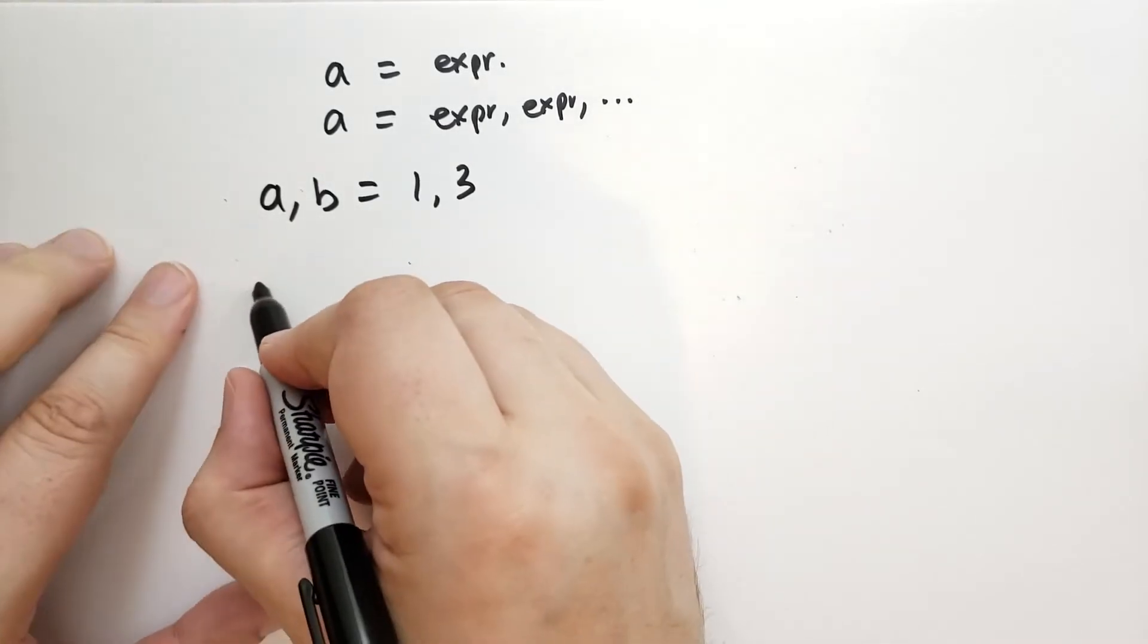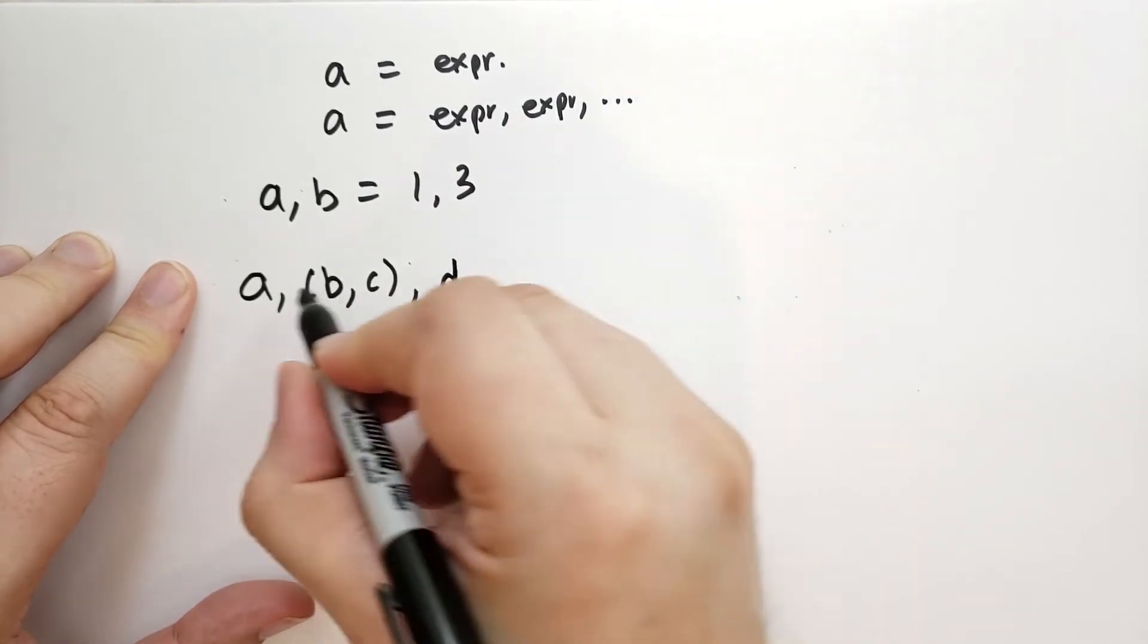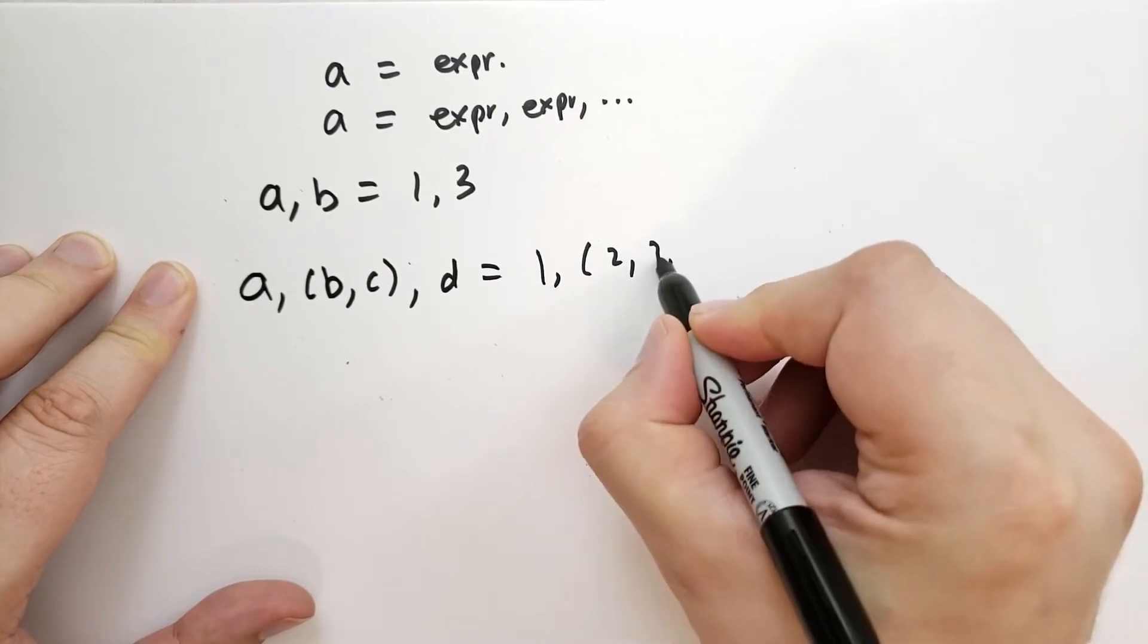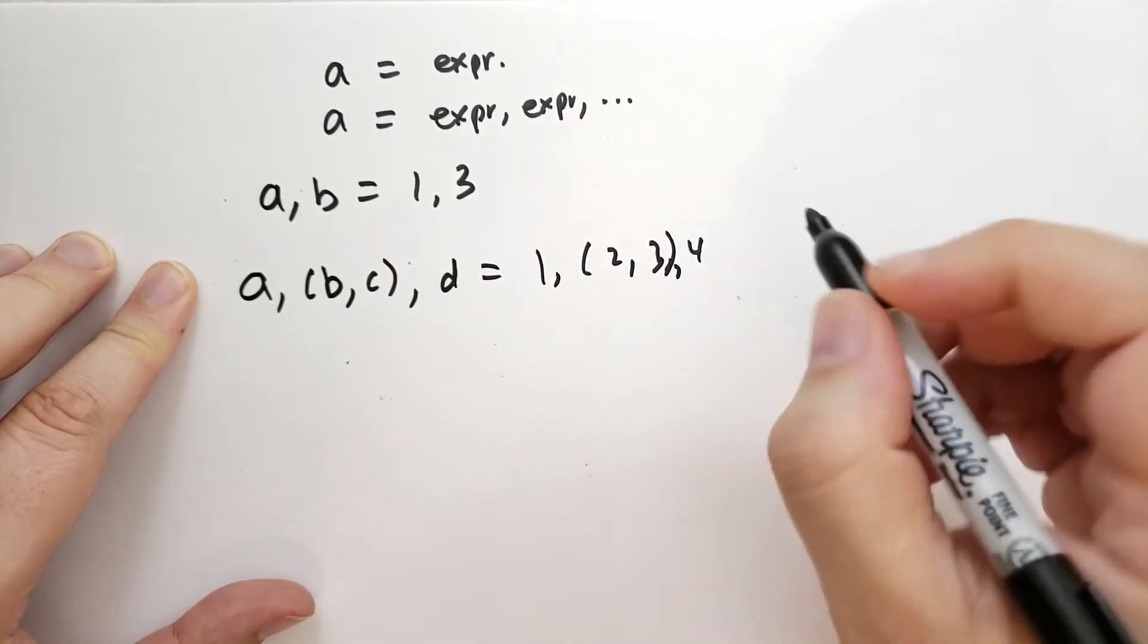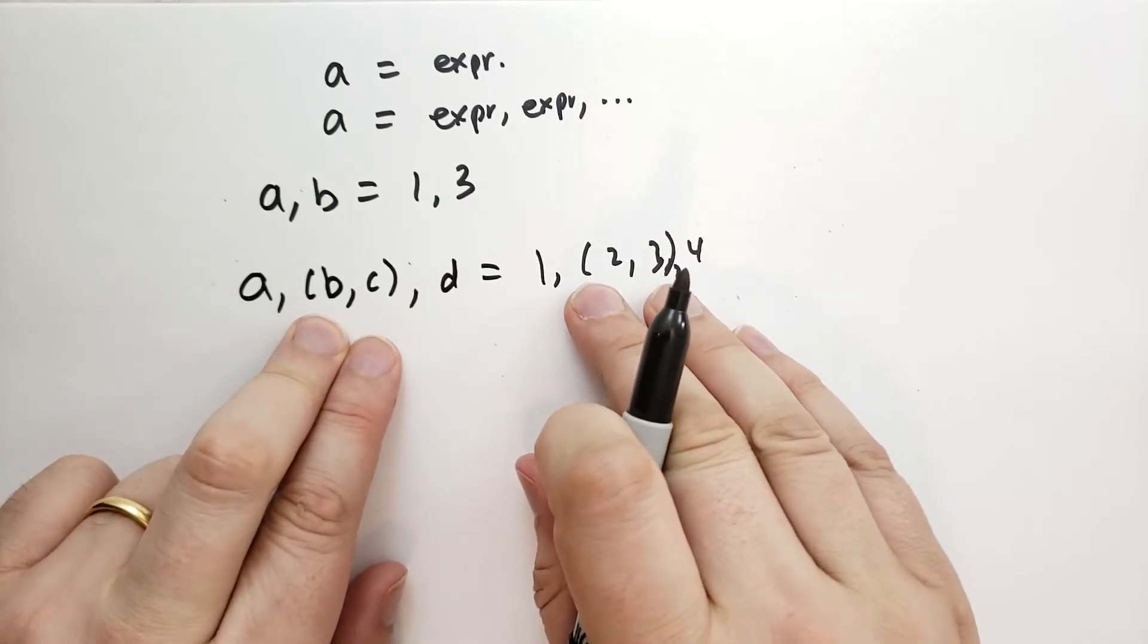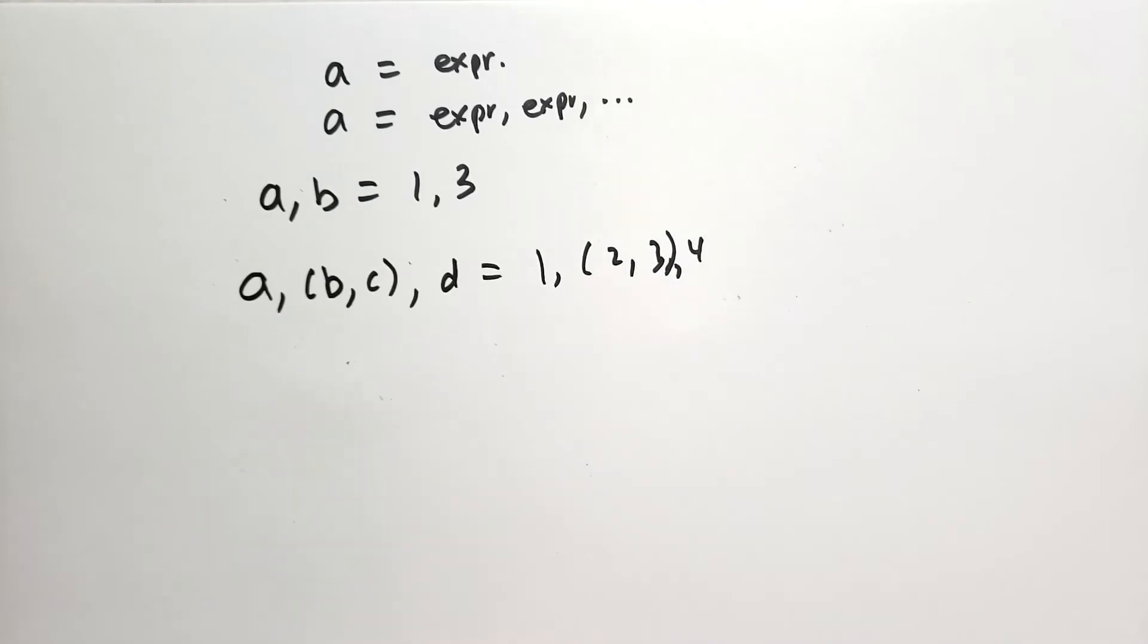The beautiful thing about this is you can actually nest. So you can have a, (b,c), d = 1, 2, 3, 4. And so this will assign 1 to a, and then it'll try to assign 2 and 3 to b and c. So 2 goes to b, 3 goes to c, and then 4 goes to d.